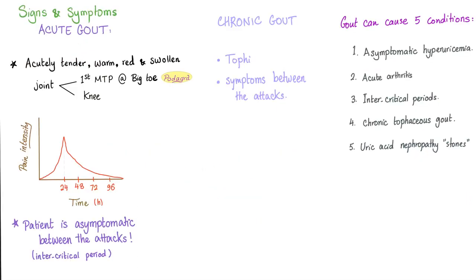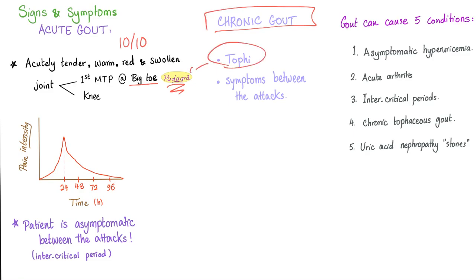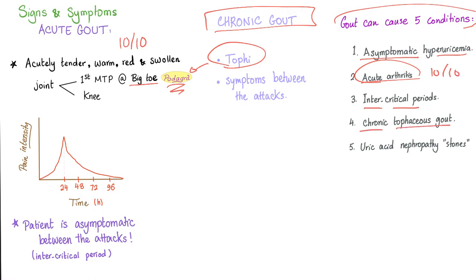Acute gout presents with severe pain, often 10 out of 10, typically at the big toe — we call this podagra. Chronic gout involves tophi. Gout can lead to five different conditions: asymptomatic hyperuricemia, acute arthritis, intercritical periods, chronic tophaceous gout, or uric acid nephropathies, which are kidney stones.